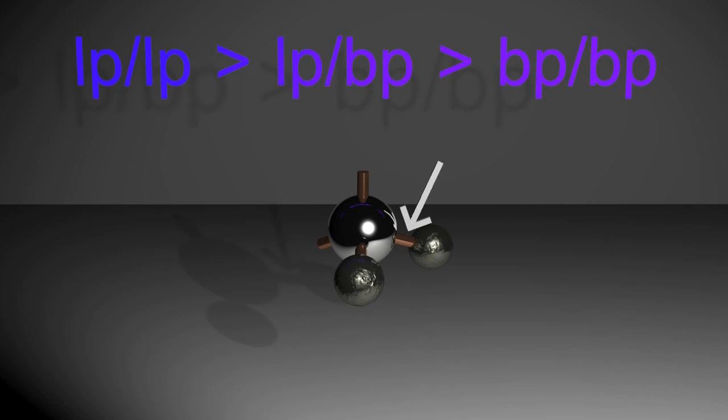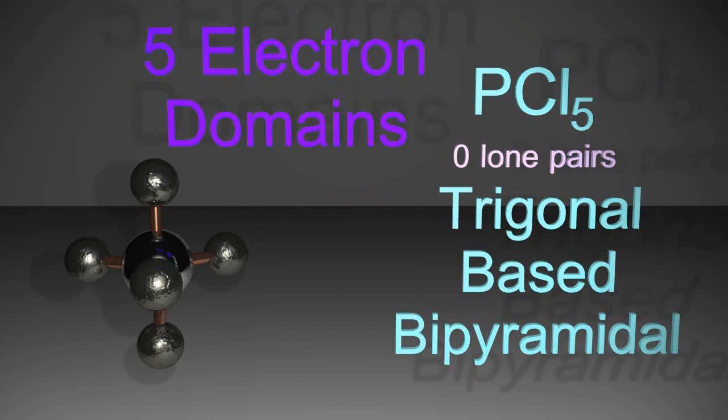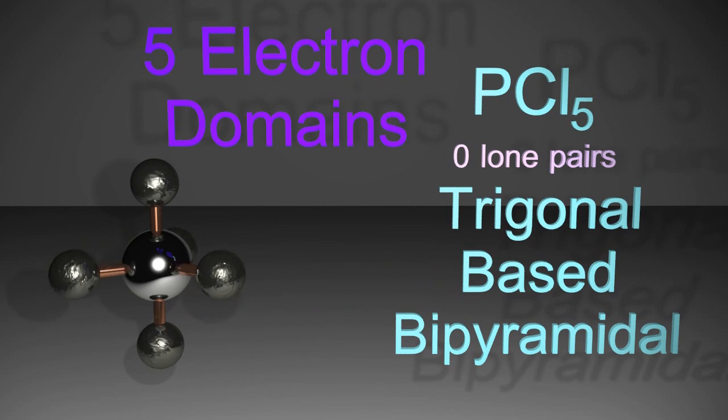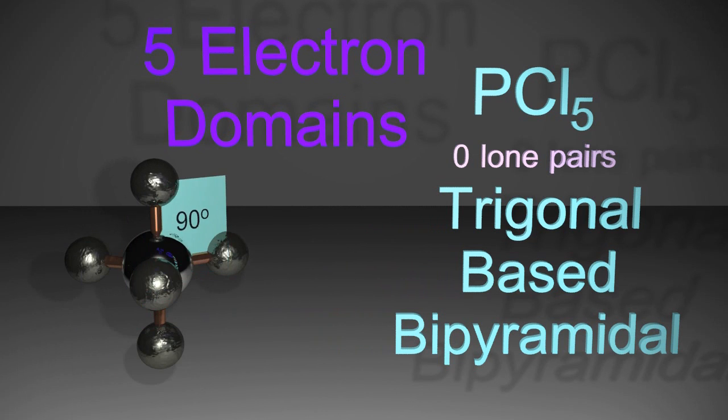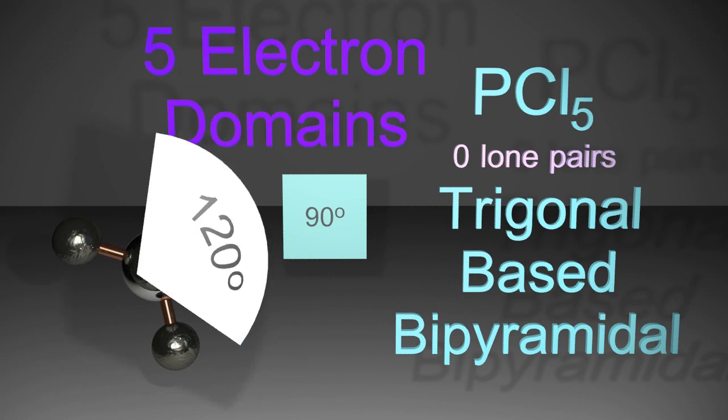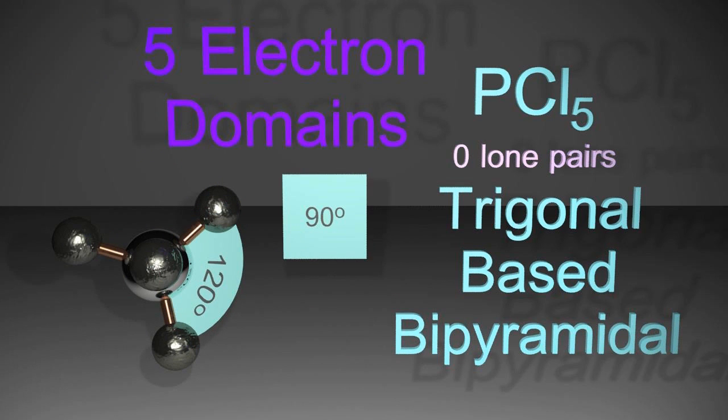Okay, on with the five electron domains. So looking at the trigonal bipyramidal molecule, phosphorus pentachloride, there are no lone pairs and so that gives us bond angles of 90 and 120 degrees along the equator of the molecule.